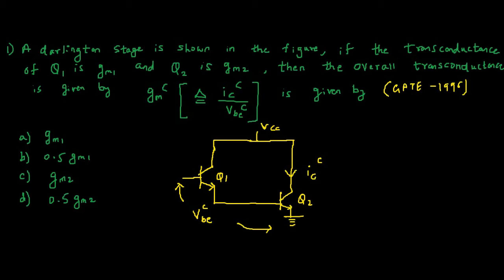We can write the base to emitter voltage of Q1 as VBE and same for Q2, because both are identical transistors. So VBE collective will be equal to VBE plus VBE, the sum of these two VBE. This is equal to 2 times VBE.